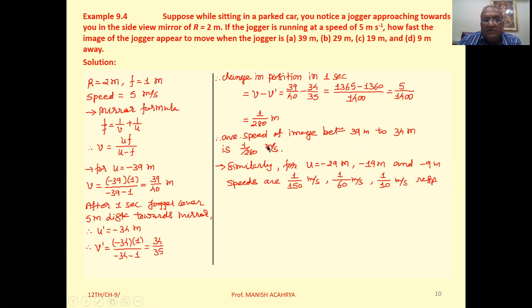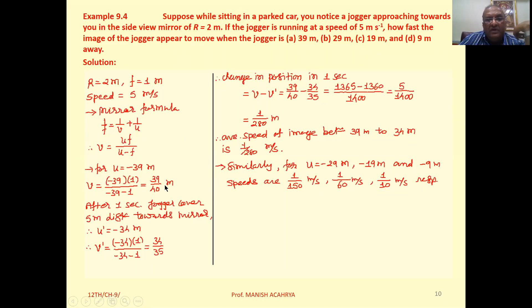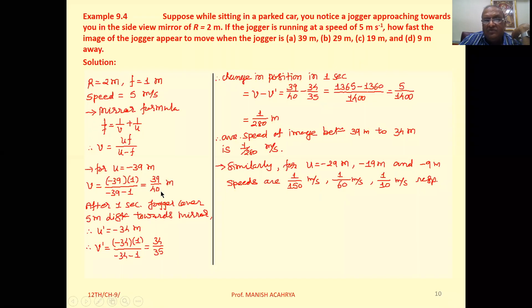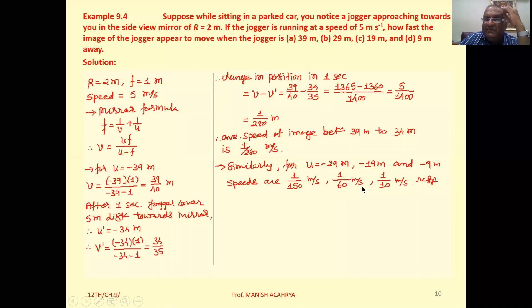For 29 meter, you get 24 by 25. And if you solve, the answer is 1 by 150 meter per second. If you take 19 meter, then you get 19 by 20 meter and 14 by 15. If you take the difference, it's 1 by 60 meter per second.